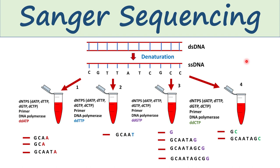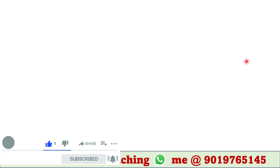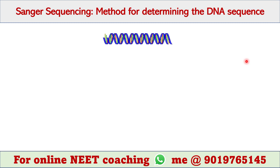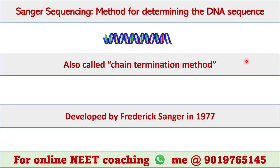Hey guys, this is Malinky, welcome back to my channel, Voice of Malinky. Today we will talk about Sanger sequencing. Sanger sequencing is a method for determining the DNA sequence. This method is also called the chain termination method. It was developed by Frederick Sanger in 1977, hence the name Sanger sequencing.